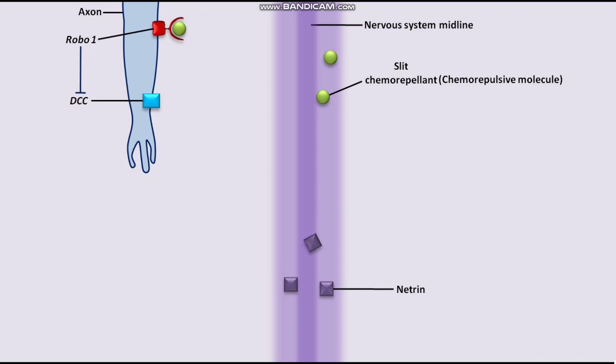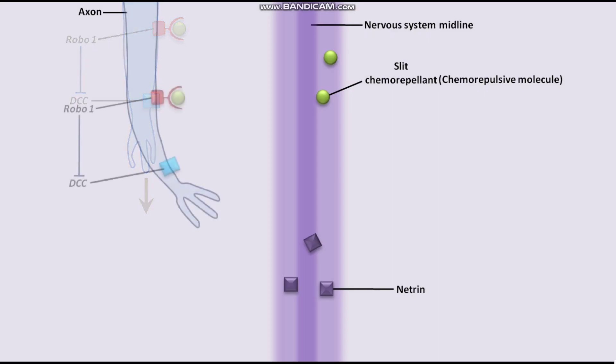As a result, the axon of the commissural neuron extends toward the midline. Due to this extension, the axon gets near the nervous system midline.